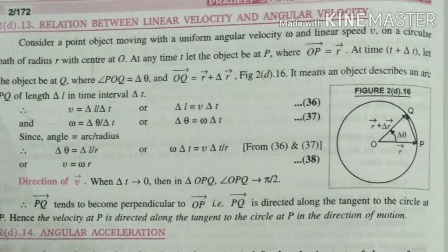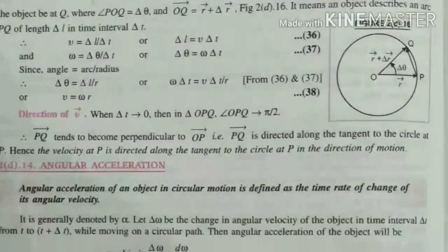Omega equals delta theta by delta t, so delta theta equals omega delta t. Now see, angle equals arc by radius relation: delta theta equals delta L by r. So this will be omega delta t equals v delta t by r. Delta t cancels out, giving v equals omega r.